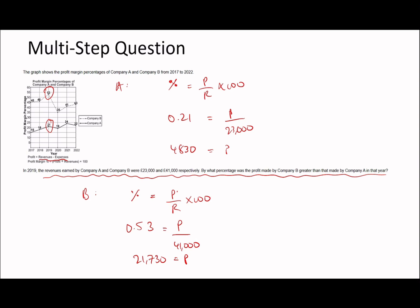Now you have your two profit numbers, so calculate the percentage difference. I'll use the shortcut this time: for percentage change, divide one value by the other, subtract 1, then multiply by 100. So 21,730 divided by 4,830, minus 1, times 100 gives approximately 349.90 percent. That's how much greater company B's profit was compared to company A's.